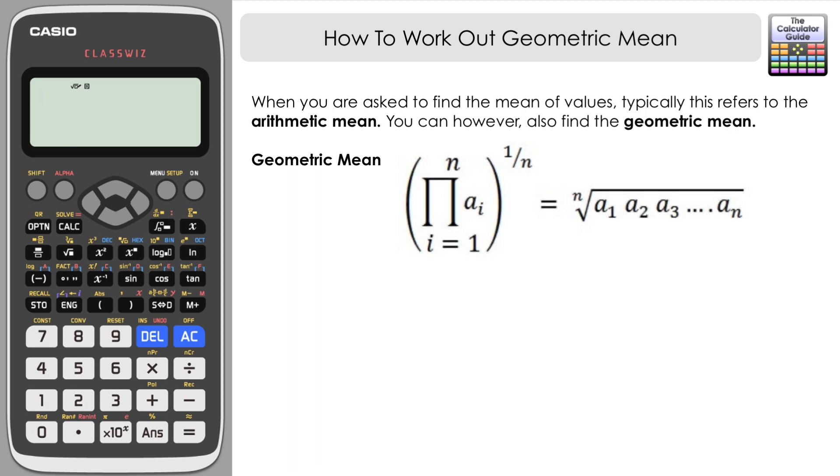You might be familiar with raising values to one over a number, which would then be the root of that. So for example if we did have three values in our data set, we would raise that to the power of one over three, one third. That would be the same as taking the cube root of those values.